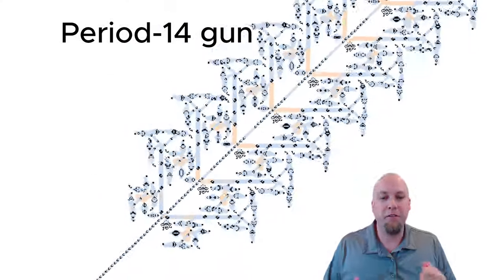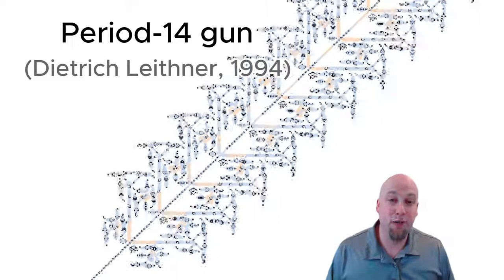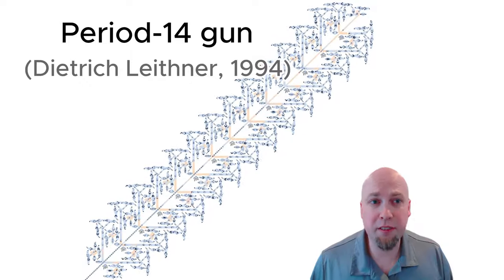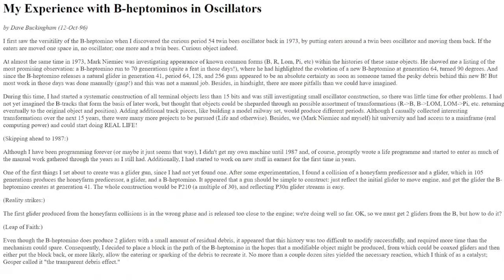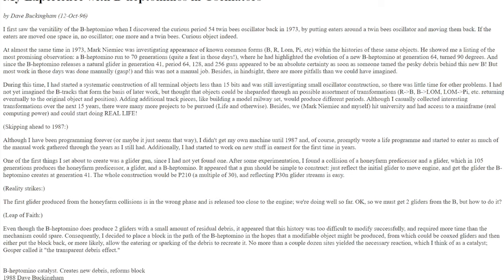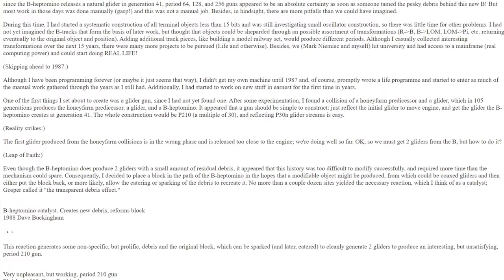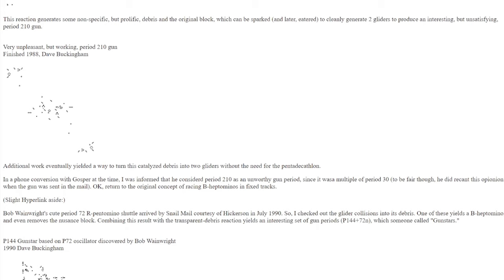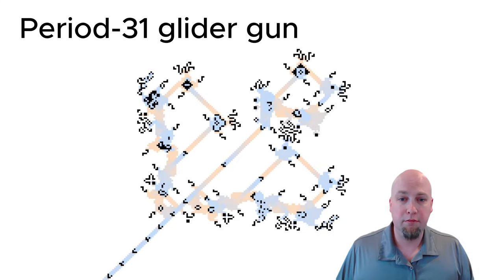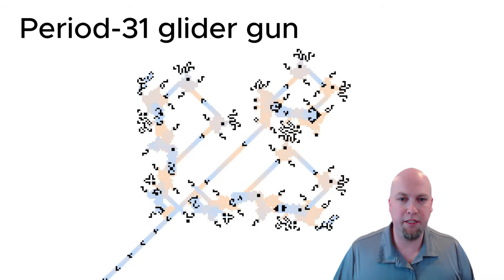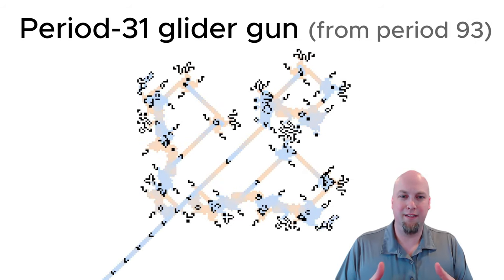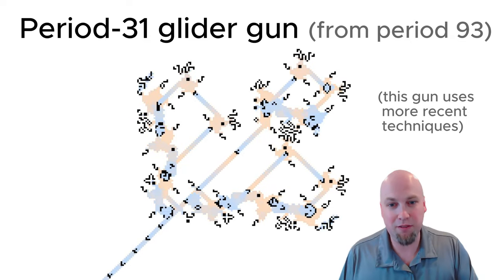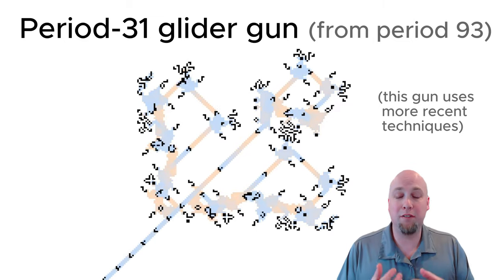And these sorts of techniques, they're used by Dietrich Leithner back in 1994 to create the very first ever period 14 glider gun. And then just two years later, David Buckingham came up with a toolkit that lets you construct glider guns of any large period that you like. And when you combine that with the stream merging techniques that we just talked about, it actually lets you construct glider guns of any period that you like. So, for example, if you wanted a glider gun of period 31, you could just use Buckingham's toolkit to construct a glider gun that has period that's a large multiple of 31 and then just merge a whole bunch of those streams together to get the period back down to 31.